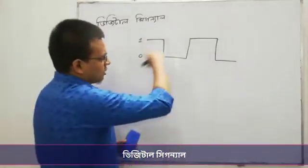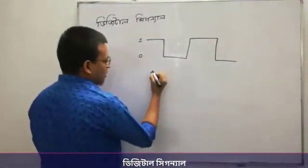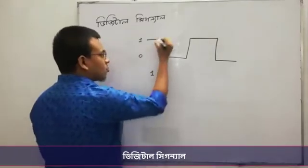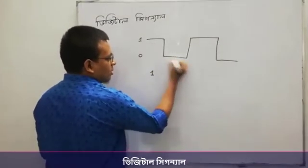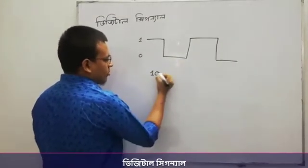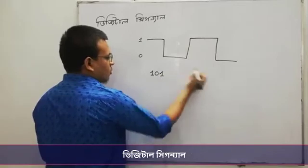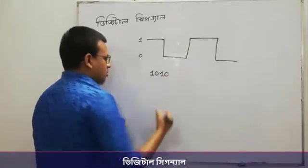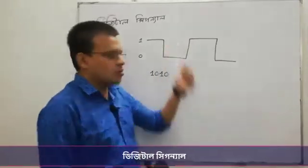Now we need to understand this signal. The signal is very important. First, the signal is 1, then 0, then 1, then 0. So this signal is 1, 0, 0.